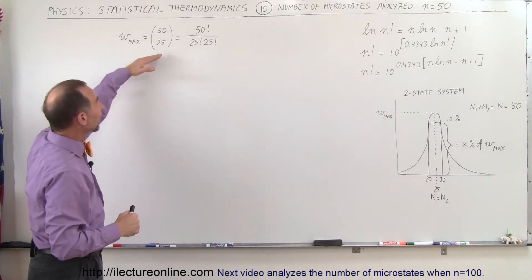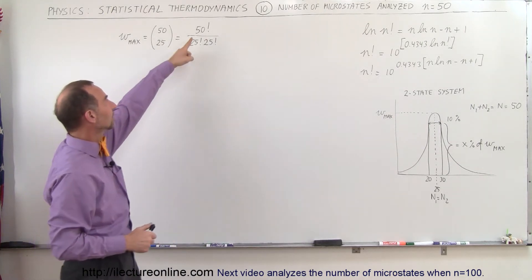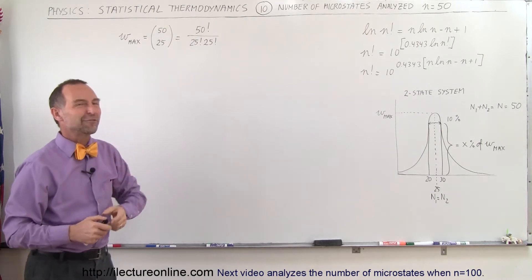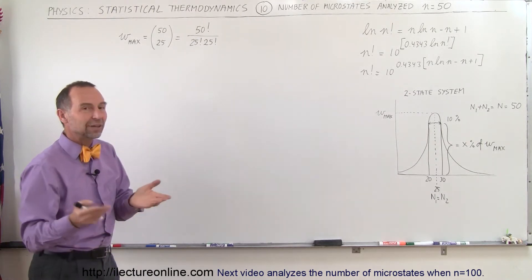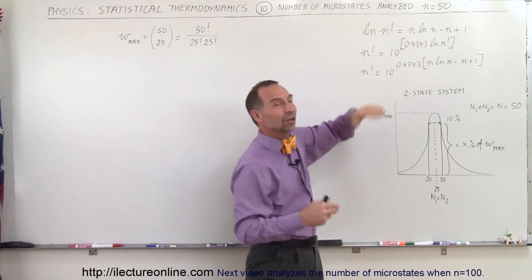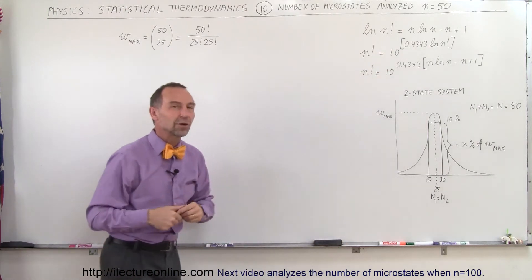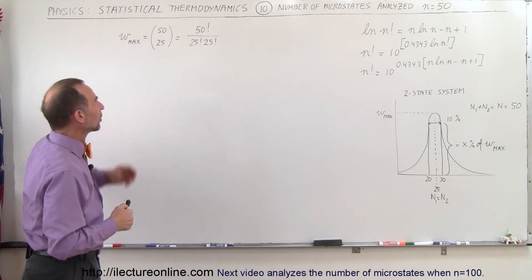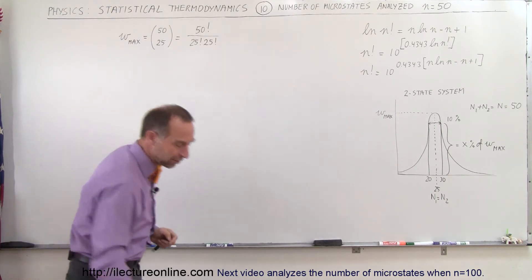And since the numbers are still relatively small, we can still use our calculator to find the factorial of 50 and 25. So we don't have to use Sterling's approximation yet. We have that waiting in the wings when the numbers become too big, where we can no longer find the factorial of those numbers. All right, so let's try that.